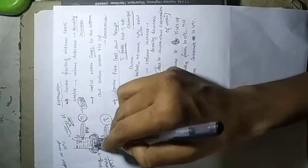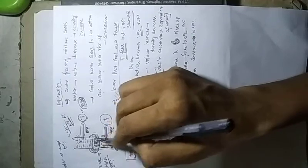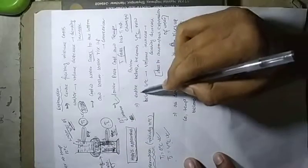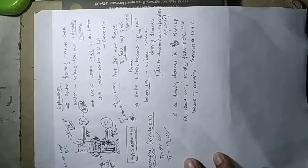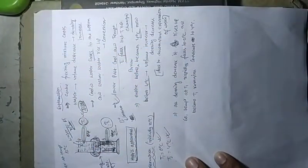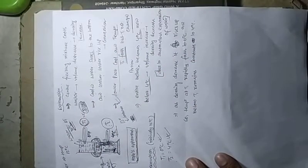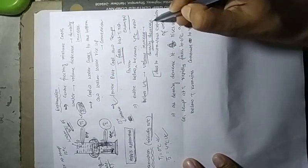First, the water in contact with the freezing mixture cools and sinks as its density increases. The 12-degree water moves up. One by one, the entire lower portion becomes 4 degrees. Now below 4 degrees, the freezing mixture continues cooling. But below 4 degrees, due to the anomalous expansion of water, volume increases and density decreases.